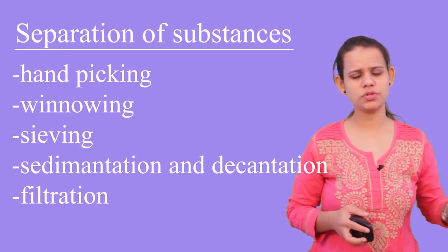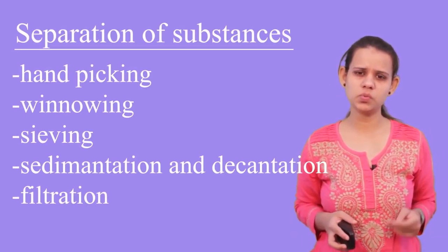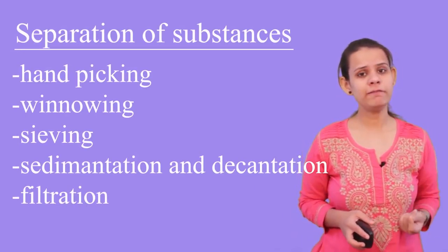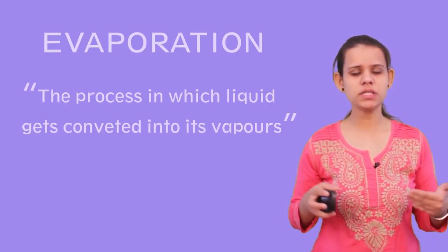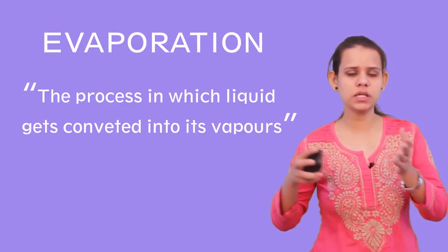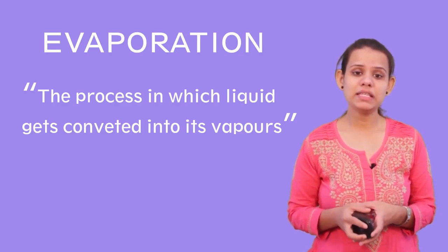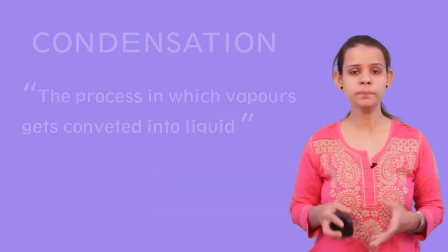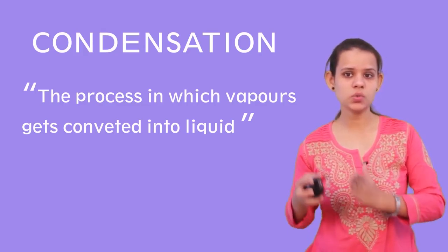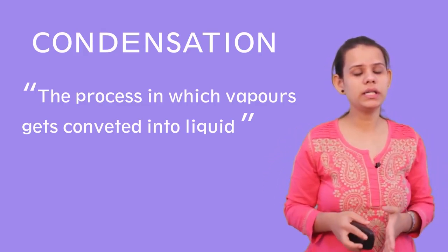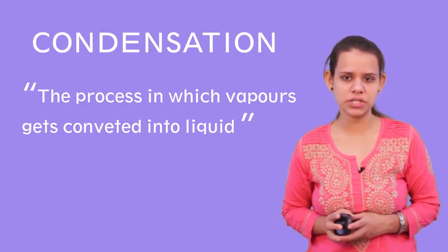After learning all these processes of separation of substances, we learnt about some terms — evaporation and condensation. The process in which liquid gets converted into its vapor we call evaporation, and this evaporation is used to separate a solid from liquid. After that we also learnt about condensation — the process in which vapor gets converted into liquid.